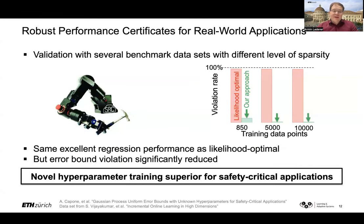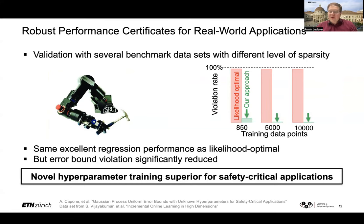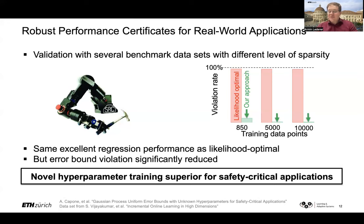We tested this on real-world data, for example the Sarcos robot arm dataset with roughly 45,000 samples. With only 850 data points there is still a relevant number of violations of our error bound, but as we increase the training data, violations significantly reduce — in contrast to the likelihood-optimal approach, which still has an extremely high violation rate. Since we use exactly the same mean function as the likelihood-optimal approach, we don't suffer any disadvantages in regression accuracy.